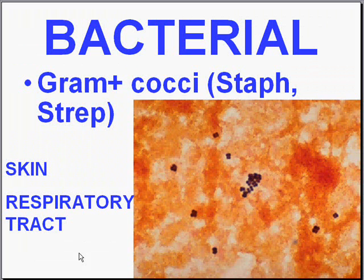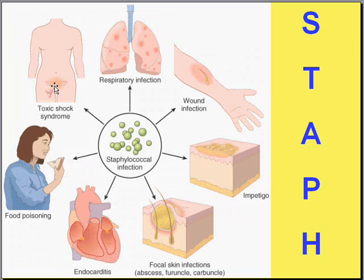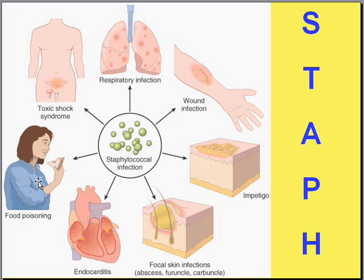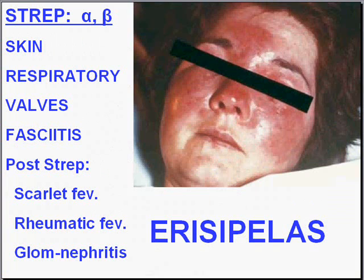Gram-positive cocci — staph and strep — can cause infections literally anywhere, most commonly skin and upper and lower respiratory tract. Staph has been indicted as the cause of toxic shock syndrome via superantigen release. It's a common cause of wound and skin infections, including impetigo with strep, folliculitis, and is the most common cause of endocarditis in IV drug users. Staph toxins are also a very common cause of food poisoning. We'll stop here and start the next group with strep.